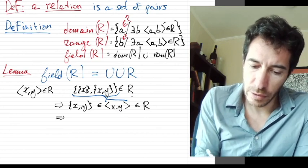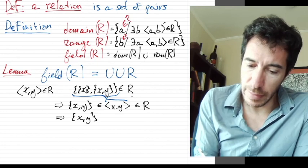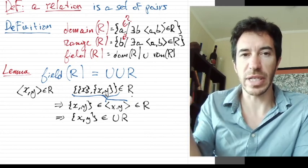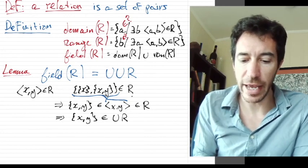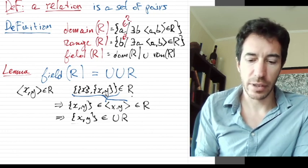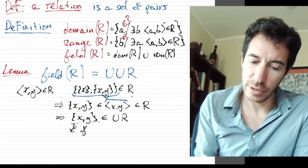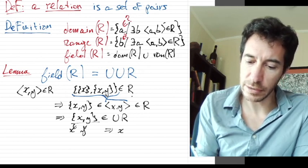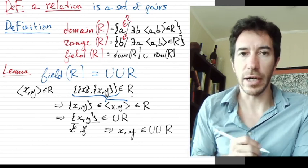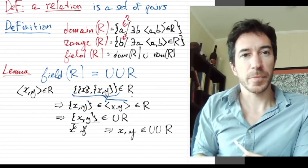Therefore, {x,y} is a member of the union of R. Because it belongs to something that belongs to R. And now x and y themselves belong to something that belongs to the union of R. So x belongs to this one and y belongs to this one. Therefore, x and y, each of them belong to the union of the union of R.